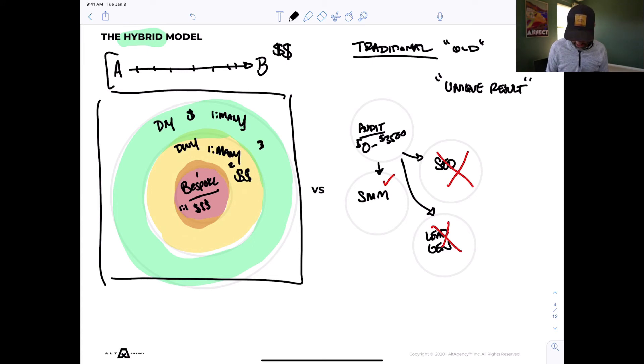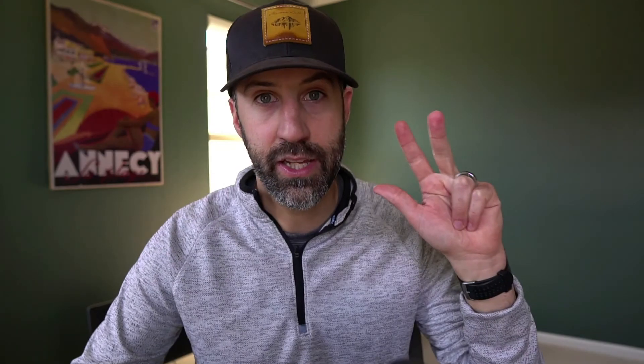And so if you're positioned as a specialist, like we teach our clients, then you can have the three core revenues, three revenue streams in your agency, your core service, your done with you service and a DIY offering in the long game. So that's three different ways you can make money compared to the traditional way of you just selling your time for money and these different packages, which is really just your labor.